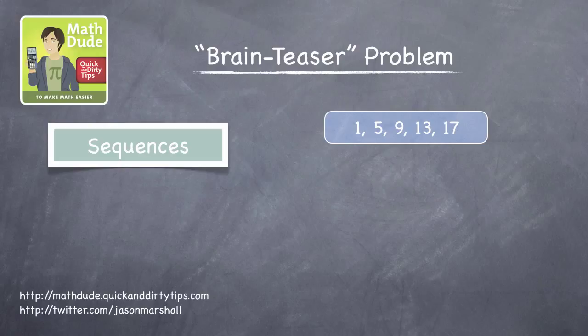First, let's use the symbol a sub n to represent each element in the sequence. I know it might sound crazy, but stick with me. The n in a sub n indicates which element we're talking about. So, a sub 1 is the first element, a sub 2 is the second, and so on.